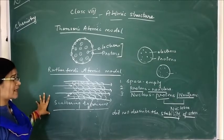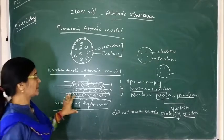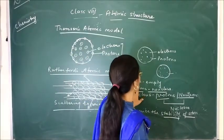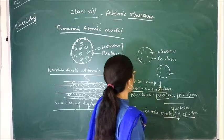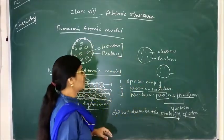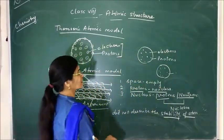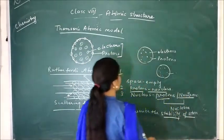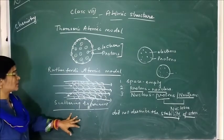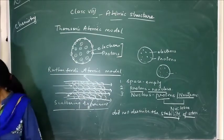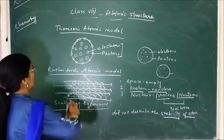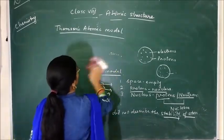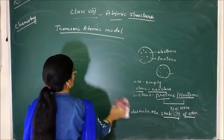Most of the things Rutherford described were good. He described that most of the empty space in the atom exists outside the nucleus, and most of the atom's mass is concentrated in the nucleus, in which protons and neutrons are present. But he did not describe the stability of the atom. So after his theory, another scientist gave a new theory called Bohr's atomic model.